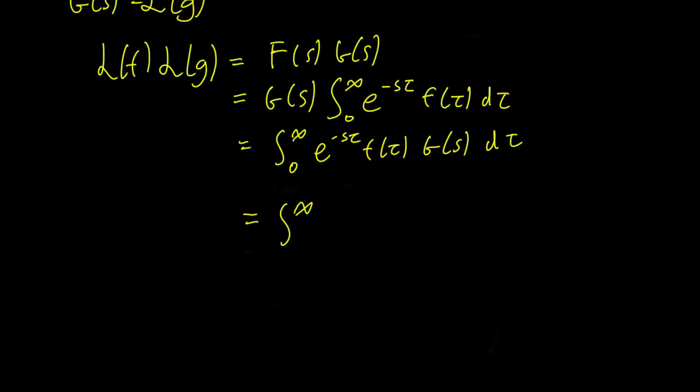We can then replace capital G with the definition of the Laplace transform. So that's infinity to 0, e^(-s), let's use sigma this time just to avoid confusion with the τ that's related to the f. So e^(-sσ) g(σ) dσ, so we have this dτ.